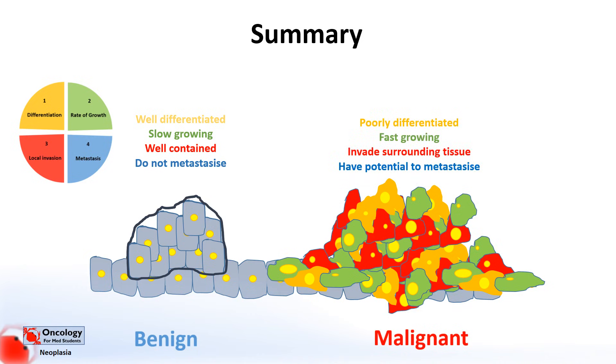Malignant neoplasms, on the other hand, tend to be poorly differentiated and fast growing. They invade the surrounding tissue and they have the potential to metastasize.